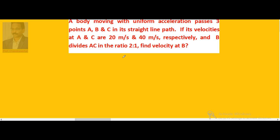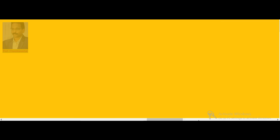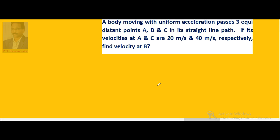Now let us consider a problem. A body moving with uniform acceleration passes three equidistant points A, B, and C in its straight line path. If its velocities at A and C are 20 and 40 meters per second respectively, find the velocity at B.